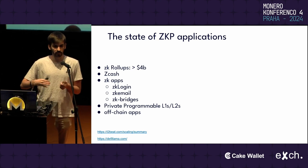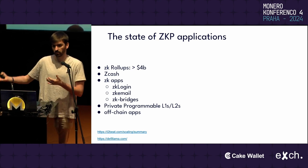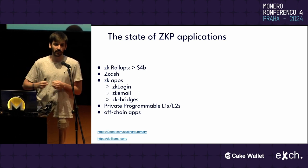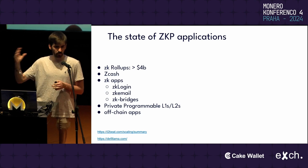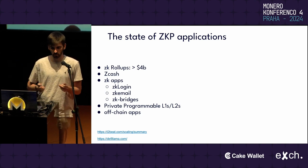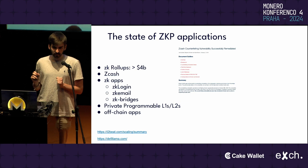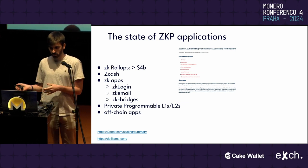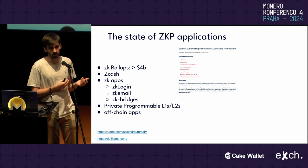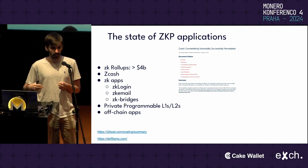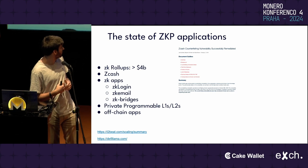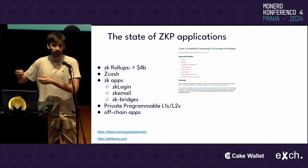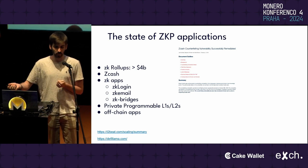Despite that growing number of protocols and systems using them, we have not yet observed a black-hat exploit of any of those protocols. But there have been some very critical vulnerabilities. For example, Zcash had a bug that was in the main deployment for almost two years, and someone from inside detected that vulnerability and patched it.